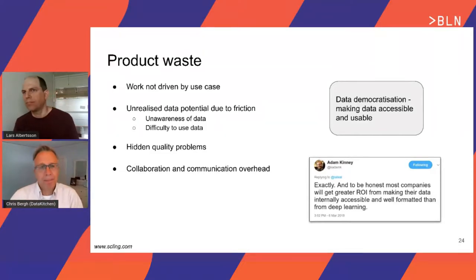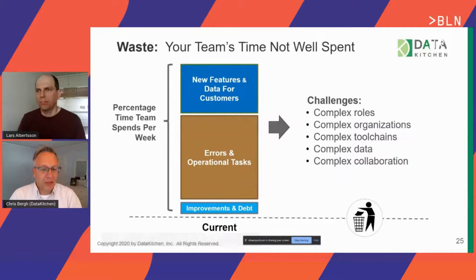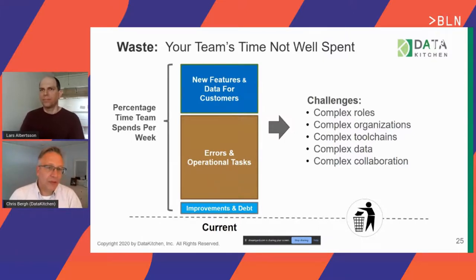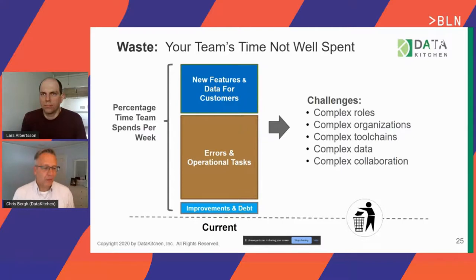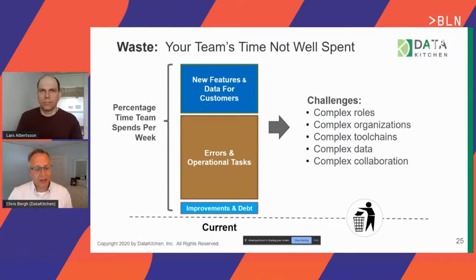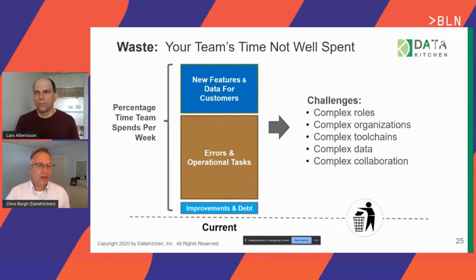One of the biggest things is that people are not spending time on doing the cool stuff they want to do — new features and data sets for customers. They're spending a lot of time in a reactive mode, reacting to errors and to the complexity of the organization. Some of that complexity comes from the fact that data and analytics is not owned by one team. The rise of self-service tools like Tableau and Trifacta have made collaboration between a central team and a decentralized team very complicated. We've got complex roles, complex organizations, complex tool chains, and as a result we're not spending enough time doing things that add value to the data products we deliver to our customers.